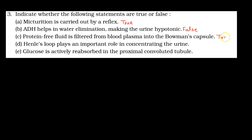Statement C is: Protein-free fluid is filtered from blood plasma into the Bowman's capsule. Yes, this statement is true. Statement D is: Henle's loop plays an important role in concentrating the urine. This statement is also true — we have seen the counter-current mechanism, where Henle's loop and the vasa recta help concentrate the urine.